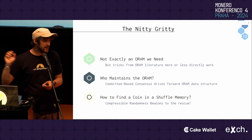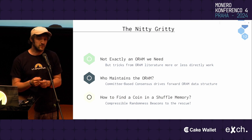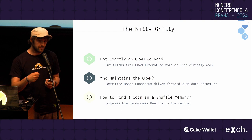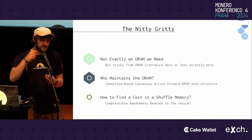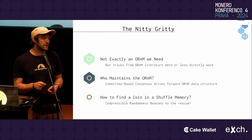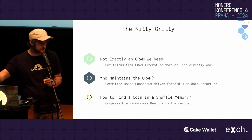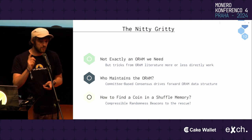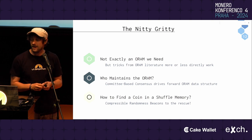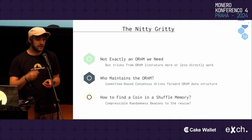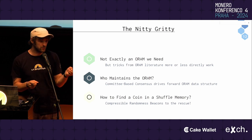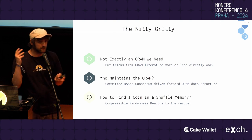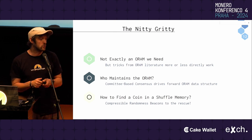This is where the randomness beacon comes into play. When Alice performs the payment, the randomness beacon publishes a value. Alice knows exactly where her coin went and tells that value to Bob, or Bob is told at which time the payment was made. Later, Bob uses the randomness beacon to recompute that value, which reveals where in the shuffled memory to look, and Bob looks up the coin there.